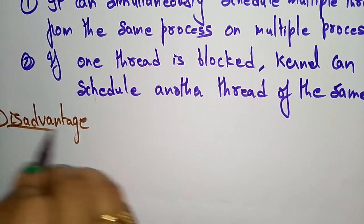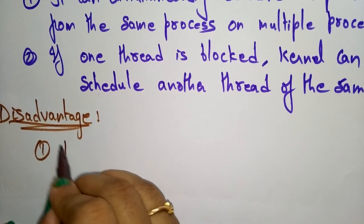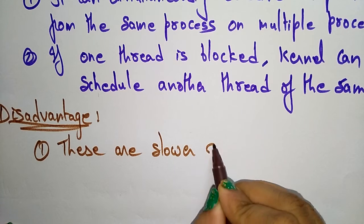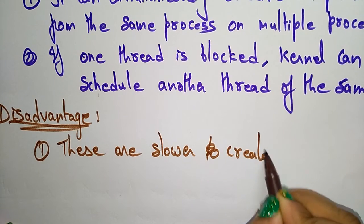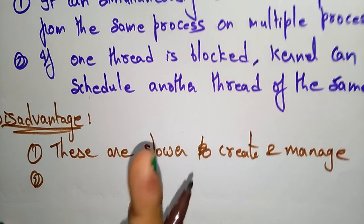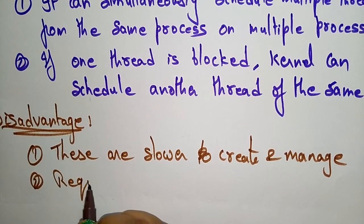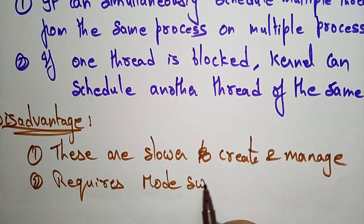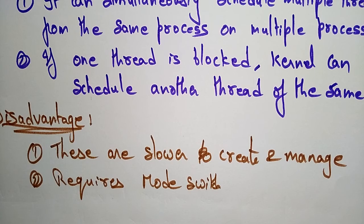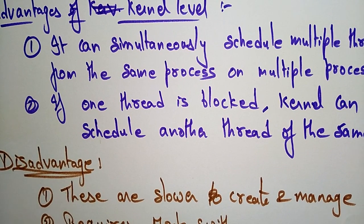Now coming to the disadvantages of kernel-level threads. These are slower to create and manage compared to user-level threads. Also, the transfer of control from one thread to another thread within the same process requires a mode switch to the kernel. So this is the kernel level type of thread.